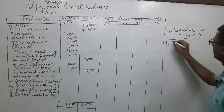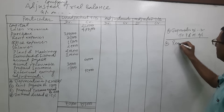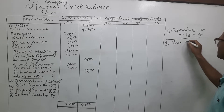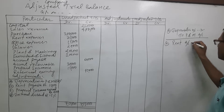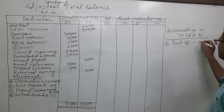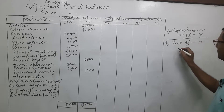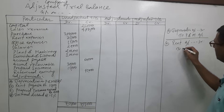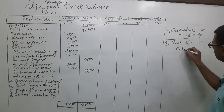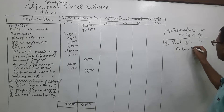For rent payable, you know it is an expense. The entry is: rent expenses account debit, to rent payable — which is a liability.